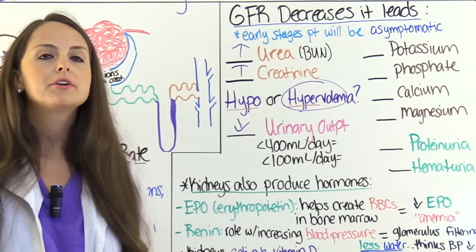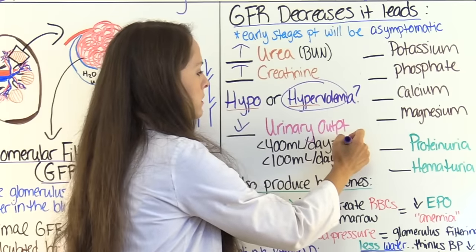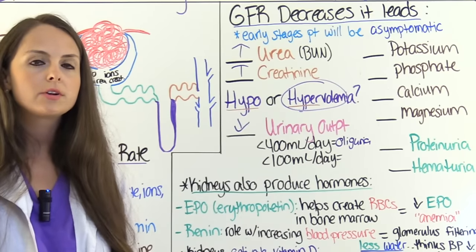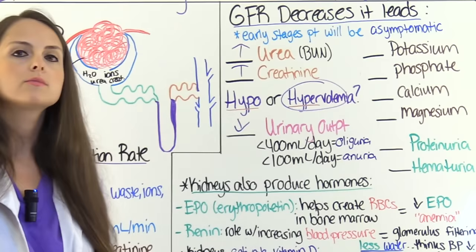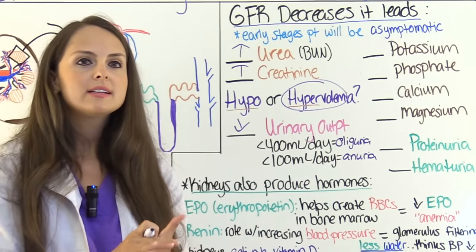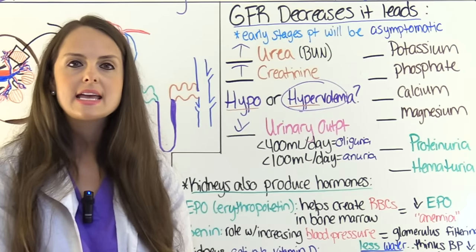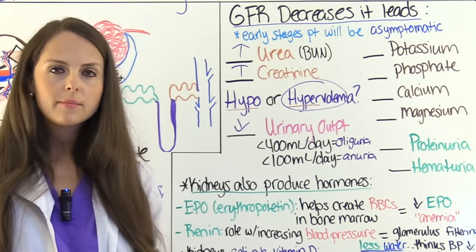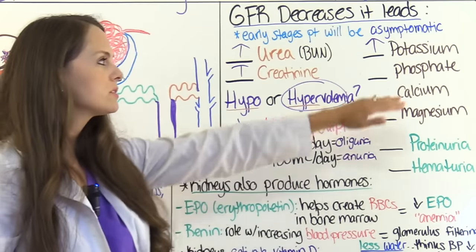Moving on to fluid and electrolytes: the glomerulus is not removing ions as it should, so electrolytes stay in the blood. Potassium will be high — we have hyperkalemia — and we really care about potassium because it can cause cardiac issues. Phosphate levels will also be high, along with magnesium levels. Creatinine is not reabsorbed by the tubule, which is why measuring it gives us a reliable indicator of glomerular function.